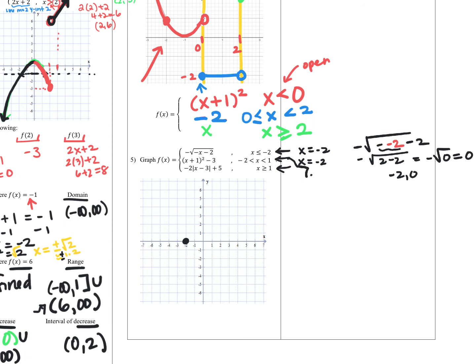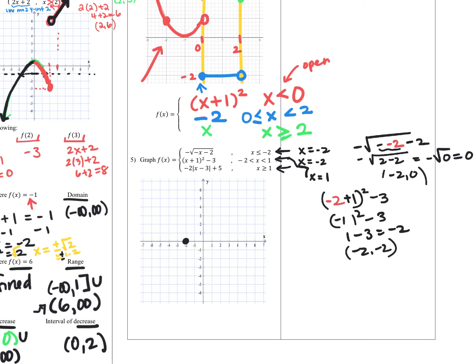For the second piece at x equals negative two: negative two plus one squared minus three is negative one squared minus three, which is one minus three, which is negative two. So (−2, −2) is an open circle on this piece. Checking x equals one in that same piece: one plus one squared minus three is two squared minus three, which is four minus three, equaling one. So (1, 1) is an open circle cutoff.